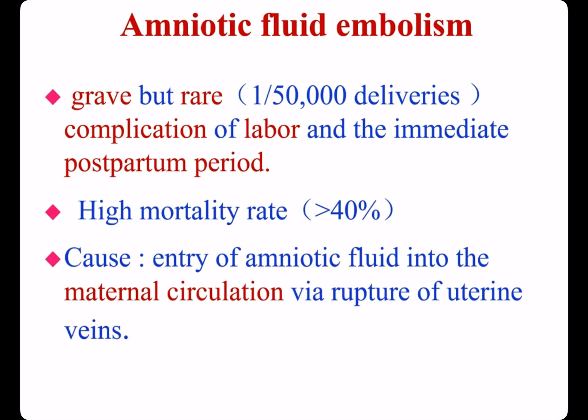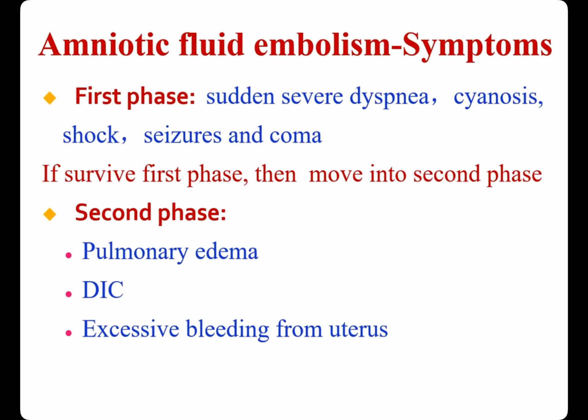The mechanism of amniotic fluid embolism: amniotic fluid enters maternal circulation while uterine veins rupture. Symptoms occur in two phases. First phase: sudden severe dyspnea, cyanosis, shock, seizures, and coma. If the patient survives, they move into the second phase, which displays pulmonary edema in half the patients due to release of thromboplastic substances from amniotic fluid.